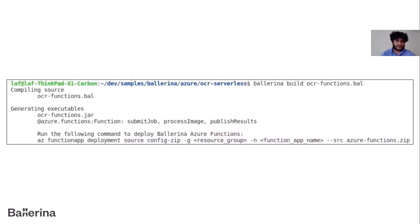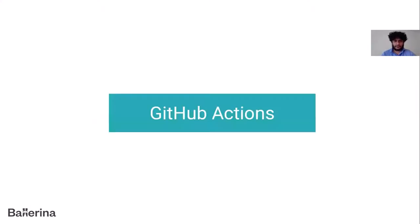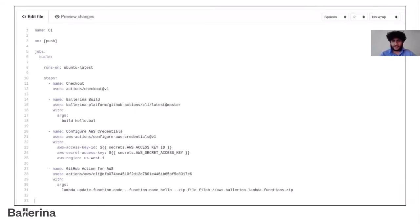Ballerina makes it easier because it handles all the build steps and deployment. By building, you're presented with deployment artifacts you can use with CLI commands to deploy straight to Azure Functions. Another critical aspect of cloud native development is CI/CD. You can use many systems like Jenkins and Codefresh. We also have support for GitHub Actions — a Ballerina GitHub Action that lets you directly build, test Ballerina applications, and deploy to a Kubernetes cluster, serverless environment, or any other target.